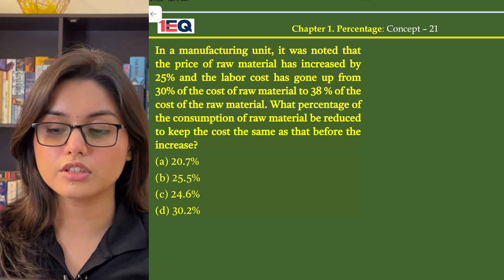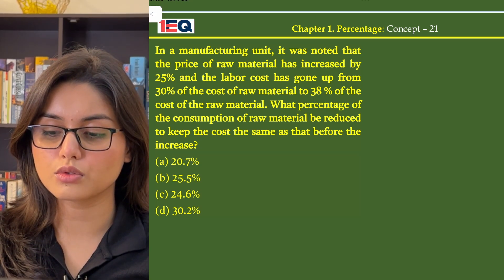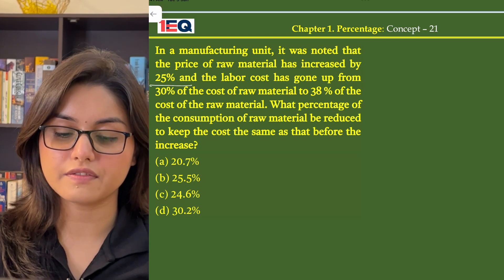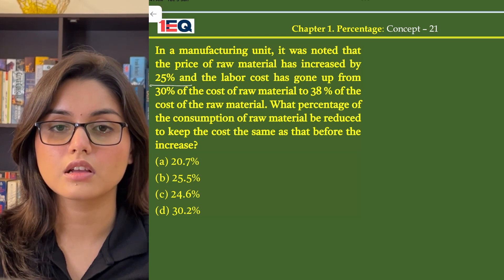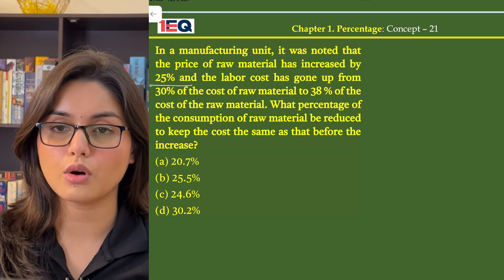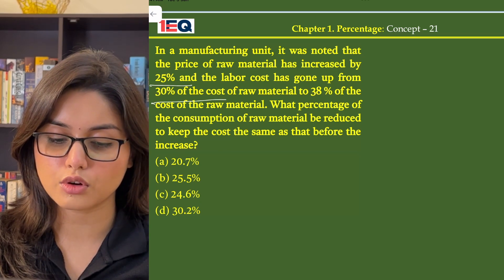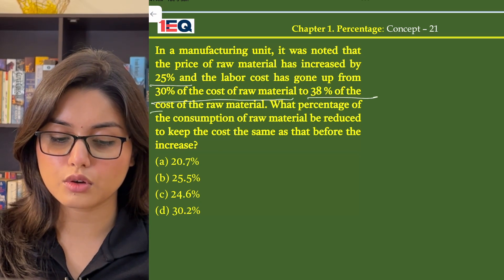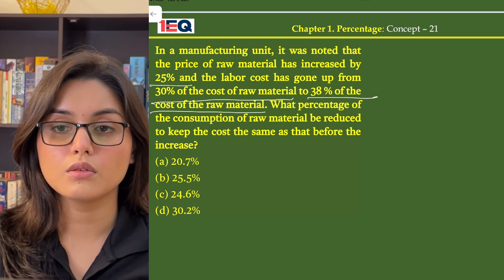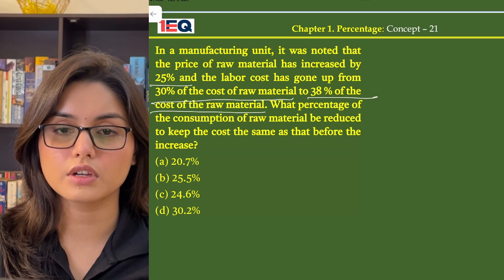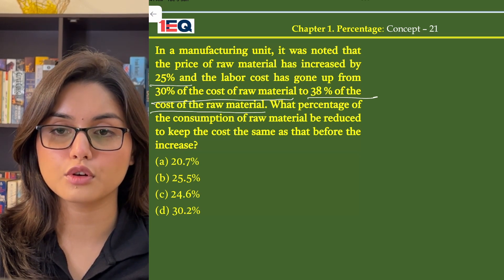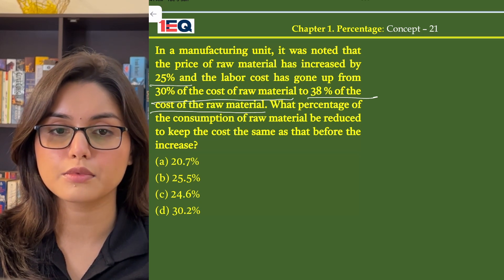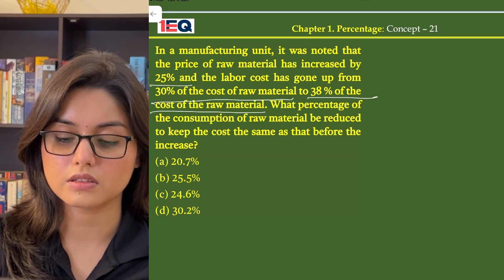In a manufacturing unit, it was noted that the price of raw material has increased by 25% and the labor cost has gone up from 30% of the cost of raw materials to 38% of the cost of raw material. What percentage of the consumption of raw material should be reduced to keep the cost the same as before the increase?